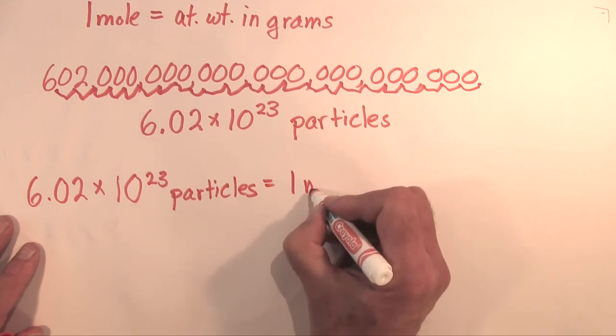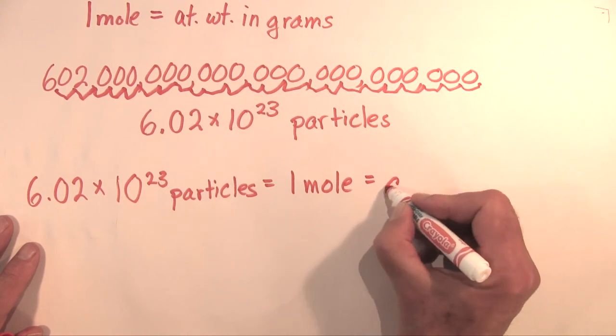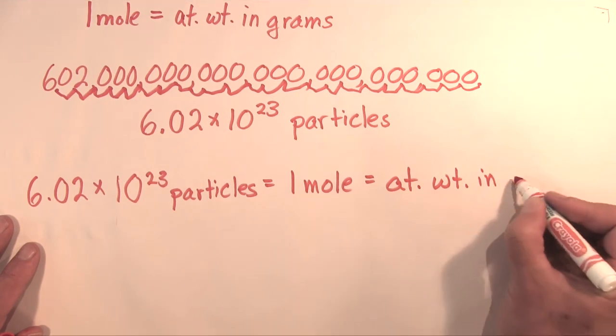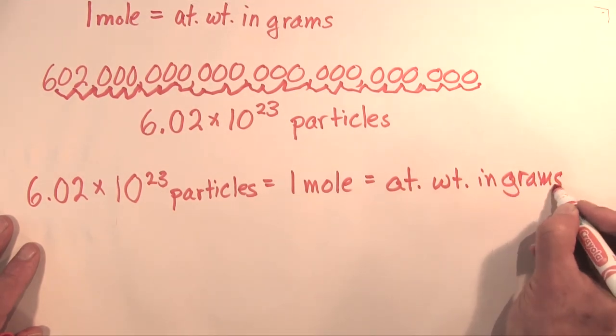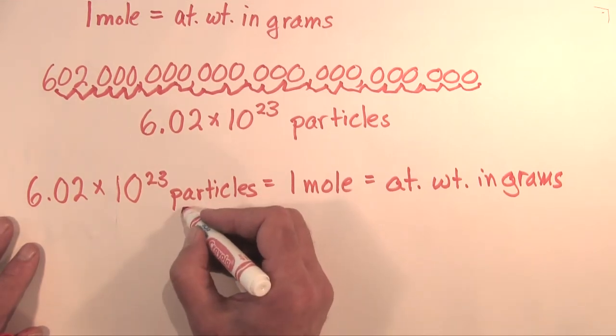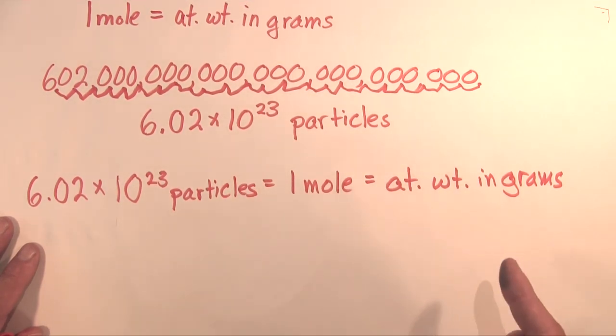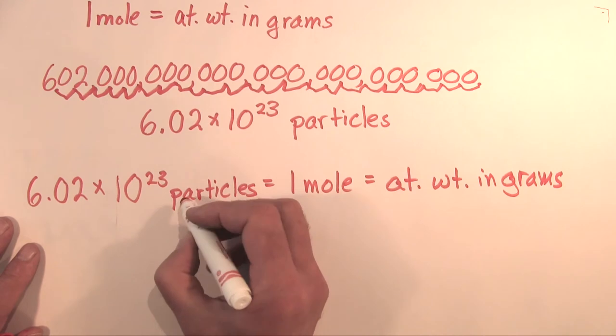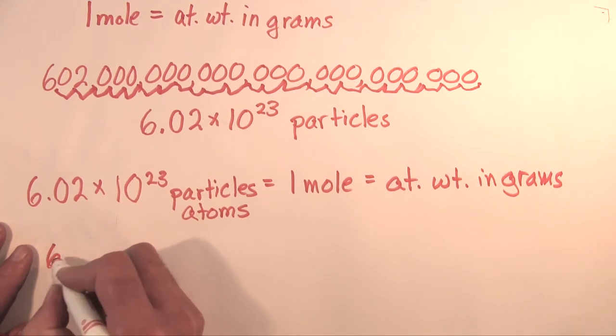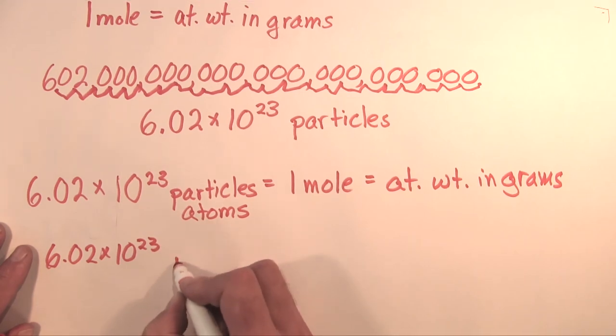I'm just going to call them particles now for this. So now we have a new part to this equation: we have 6.02 times 10 to the 23rd particles equals one mole. But we also know that a mole equals the atomic weight in grams. Now these particles can be atoms or molecules. In this case, if we're dealing with the atomic weight in grams, we're going to call these particles atoms.